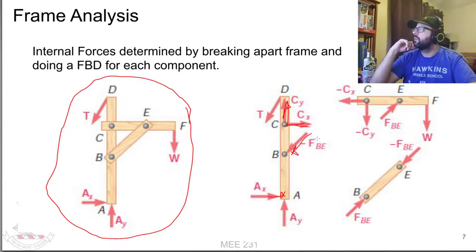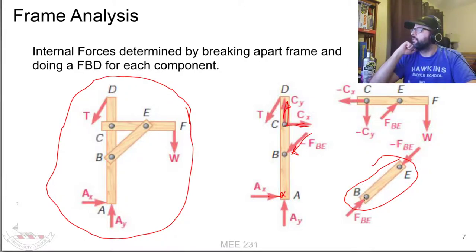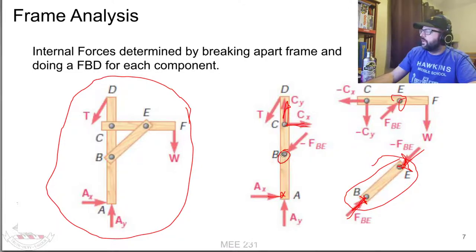BE here, that's still a two-force member because it just has the two connections and doesn't have any other forces developing. So we know the directionality of that force BE, the force applied to BE from either this member or that member, and also the force being applied to other members by BE.